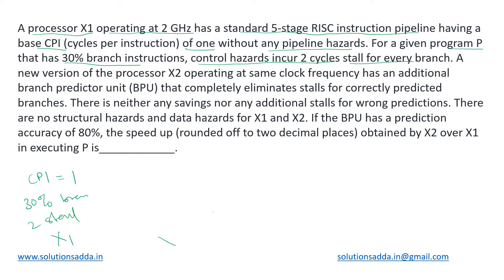Now we are talking about a new processor X2, which operates at the same clock frequency. It has an additional branch predictor unit that completely eliminates stalls for correctly predicted branches. If a branch is correctly predicted, zero stalls are required — no penalty. However, for wrong predictions, the same two stall cycles will be applied for each branch. There are no structural hazards or data hazards for either X1 or X2.